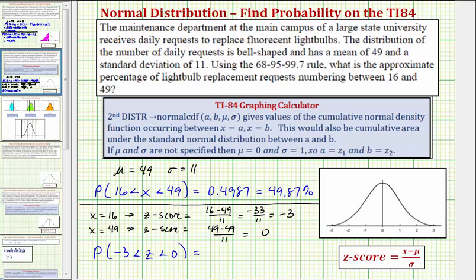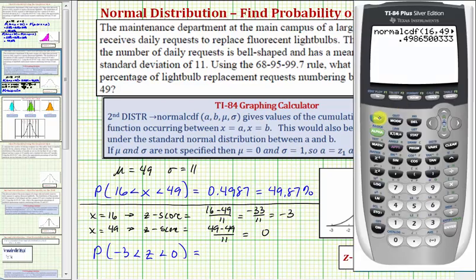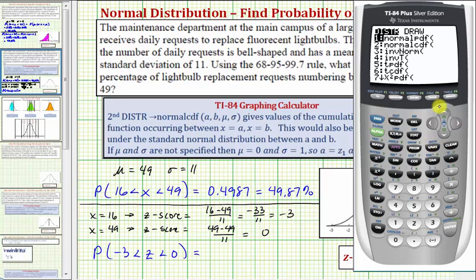So going back to the calculator, let's go ahead and press second VARS for the distribution menu, option two. And now for lower, we're going to enter the lower z-score of negative three, enter. The upper z-score is zero, so zero, enter. And again, because we have z-scores, mu would be zero and sigma would be one. And go down to paste, press enter.